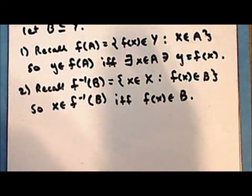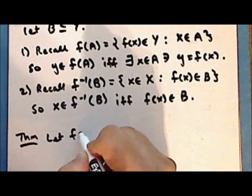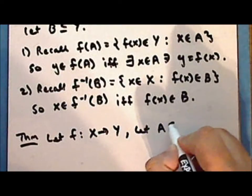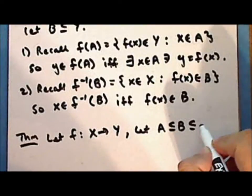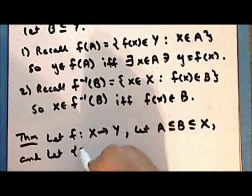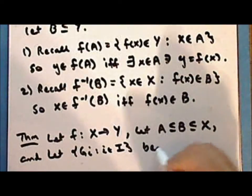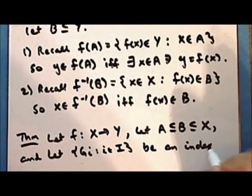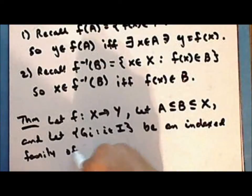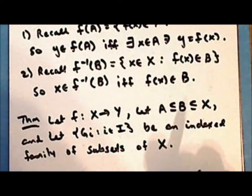So first we'll focus on direct images. As a theorem, let f be a function from x into y, let a be a subset of a set b, which in turn is a subset of the domain x, and let the collection of sets g sub i, for i in some indexing set I, be an indexed family of subsets of the domain x.